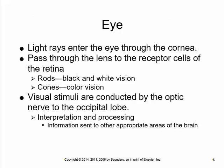A brief review of the anatomy and physiology of the eye so that we can talk about what can go wrong. Light enters through the cornea, the clear front part of the eye, passes through the lens, and an image is formed on the retina at the back of the eye. There are special photoreceptors back there — the rods and cones. Rods respond to black and white vision, and there are three types of cones, each responding to a color, responsible for color vision.